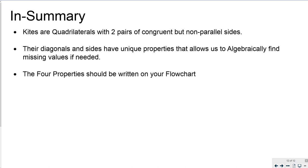So in summary guys, kites are quadrilaterals that have two pairs of congruent but non-parallel sides. All the angles inside of this quadrilateral and all quadrilaterals sum up to 360 degrees. The diagonals and sides have unique properties that allow us to find, to algebraically find missing values if needed. Please put those four properties on your flowchart. And that's it guys, that's it for today's video. Thanks for watching, see you in the next one.